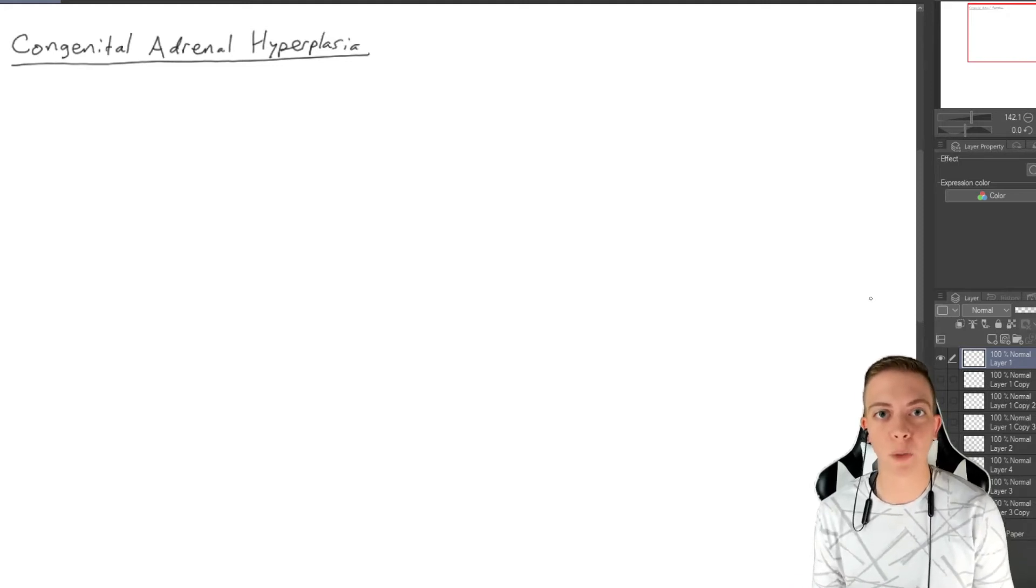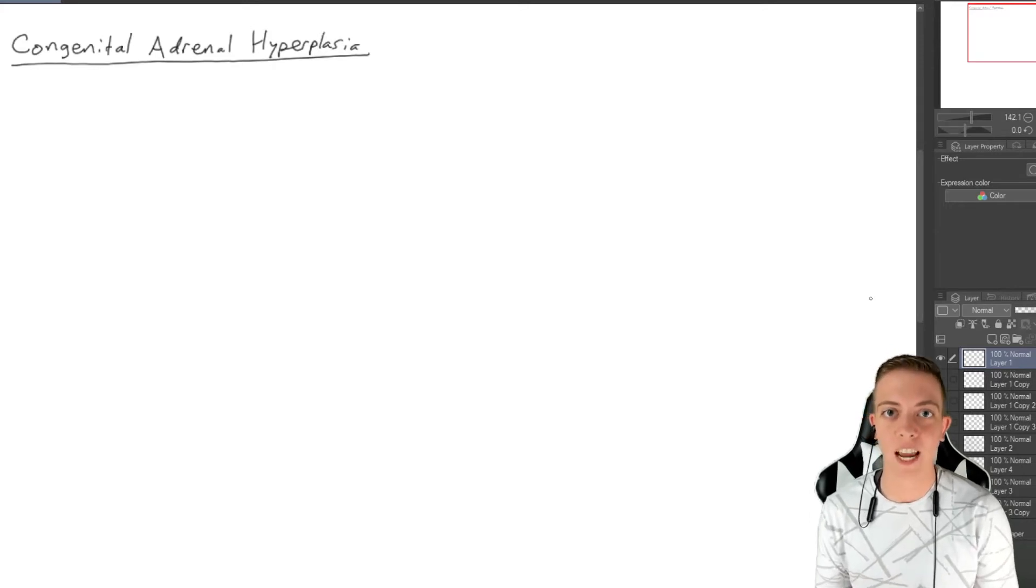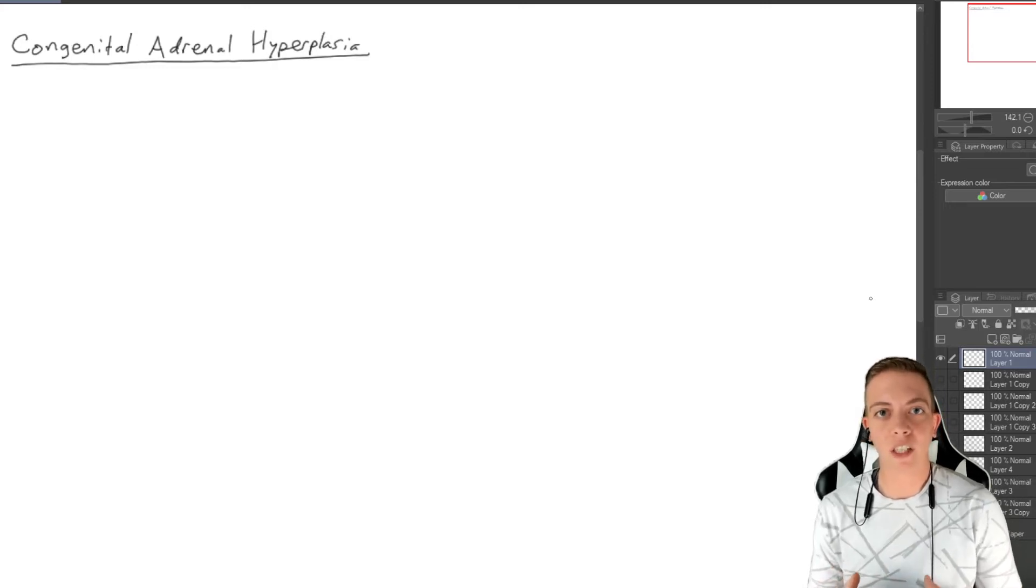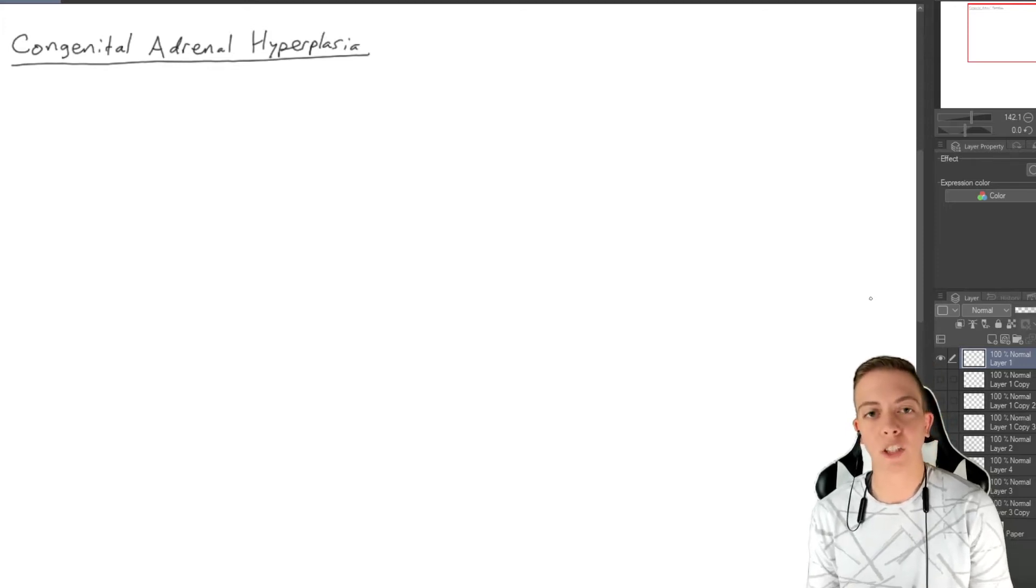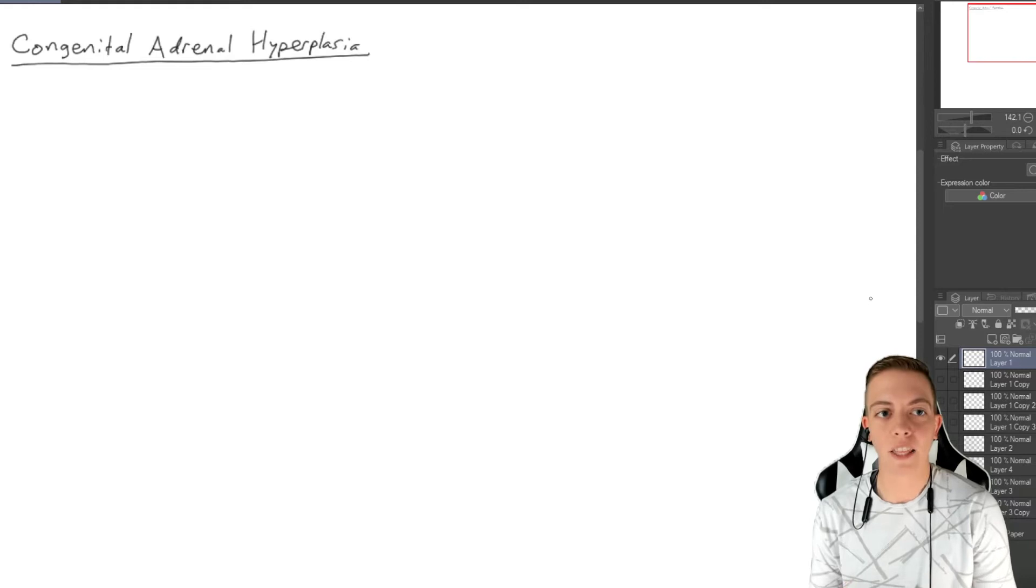In the last few videos we talked about very specific components of congenital adrenal hyperplasia because this is just a categorical term referring to the enzyme deficiencies in the adrenal glands such as 21-hydroxylase deficiency, 11-beta-hydroxylase deficiency, and 17-alpha-hydroxylase deficiency. All of these collectively cause something called congenital adrenal hyperplasia, and so we're going to talk about what exactly this means.